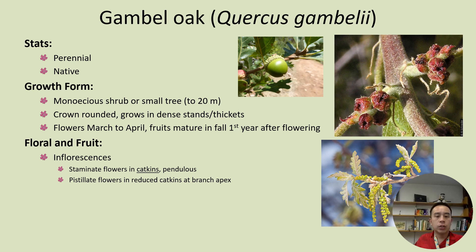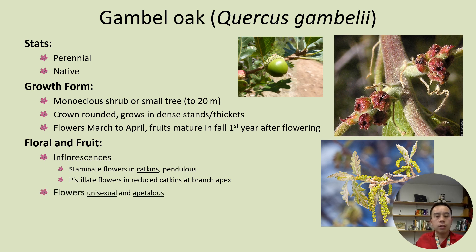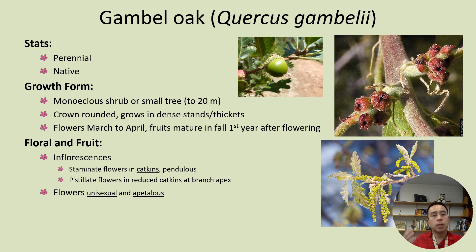We also have pistillate flowers in reduced catkins at the branch apex — that is, at the very tip of the branch. The flowers themselves are unisexual and are spatially separated on the plant. They are apetalous, meaning essentially no petals on those flowers.